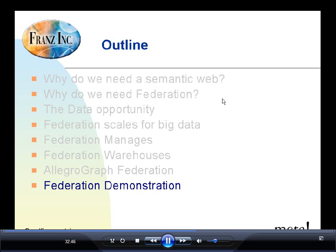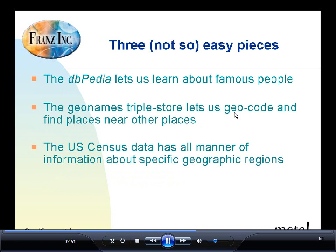Now I want to show you what AllegroGraph in federation looks like. We're going to federate together three very different triple stores — all really wonderful datasets with a lot of work gone into converting data from non-RDF formats into formats you can use in a triple store. We're going to work with the DBpedia, the GeoNames triple store, and the US Census data.